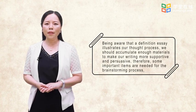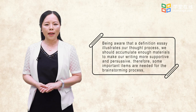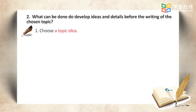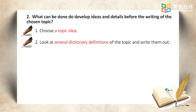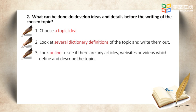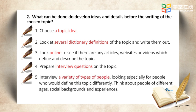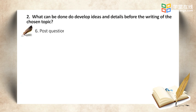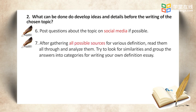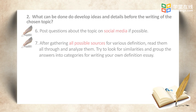Therefore, some important items are needed for the brainstorming process. First, we need to choose a topic. Next, we should gather all possible sources for the definition of the chosen topic. We can look up dictionary definitions, surf the internet for online sources, prepare questions to interview a variety of people, and pose questions on social media to gather even more interpretations. After gathering all possible sources, read them all through and analyze them. Try to look for similarities and group the answers into categories for writing our own definition essay.